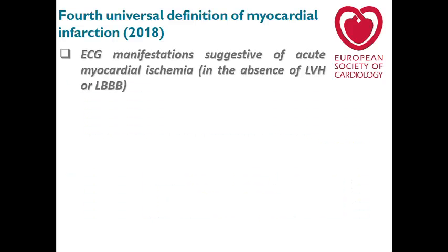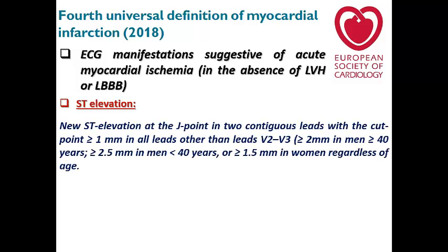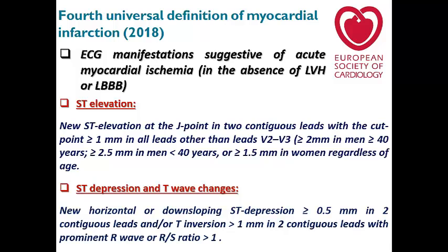Recognition of ECG patterns in the absence of ST elevation is very important clinically because some patients may have poor prognosis. In the fourth universal definition of myocardial infarction, ECG manifestations suggestive of acute ischemia include ST elevation, ST depression, and T-wave changes — defined as new horizontal or down-sloping ST depression ≥0.5 mm in two contiguous leads, and/or T-wave inversion >1 mm in two contiguous leads with prominent R-wave or RS ratio >1.